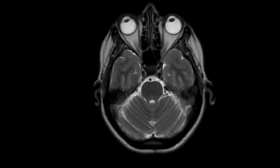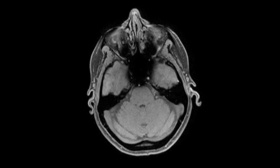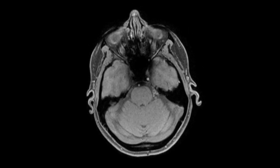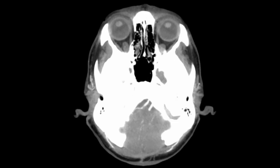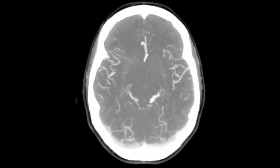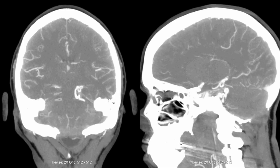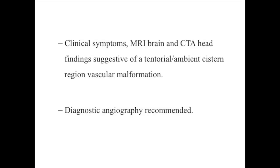Imaging investigation with MRI, MRA, and CTA revealed a likely vascular structure near the left tentorial and ambient cistern region, most likely representing a dilated vein. Based on the patient's clinical symptoms and imaging findings, we recommended a diagnostic cerebral angiography.